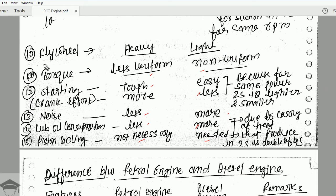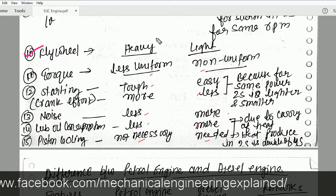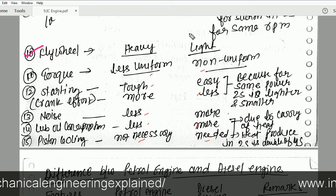Then comes the flywheel. The flywheel is heavy for a four stroke engine and light for a two stroke engine. In a four stroke engine the flywheel has to supply power to the output between power strokes, whereas in a two stroke engine it is lighter because we get one power output for every 360 degrees of crankshaft rotation.